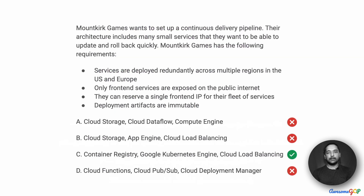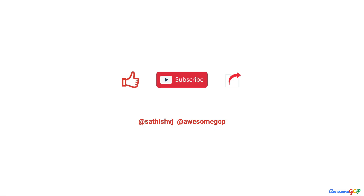That leaves us with option C — Container Registry, Google Kubernetes Engine, and Cloud Load Balancing — as the right answer for building a Continuous Delivery Pipeline for Monkirk Games' requirements. Now it's time for you to like, share, comment, and subscribe, because there's loads of great content coming up for learning Google Cloud and preparing for the certifications.